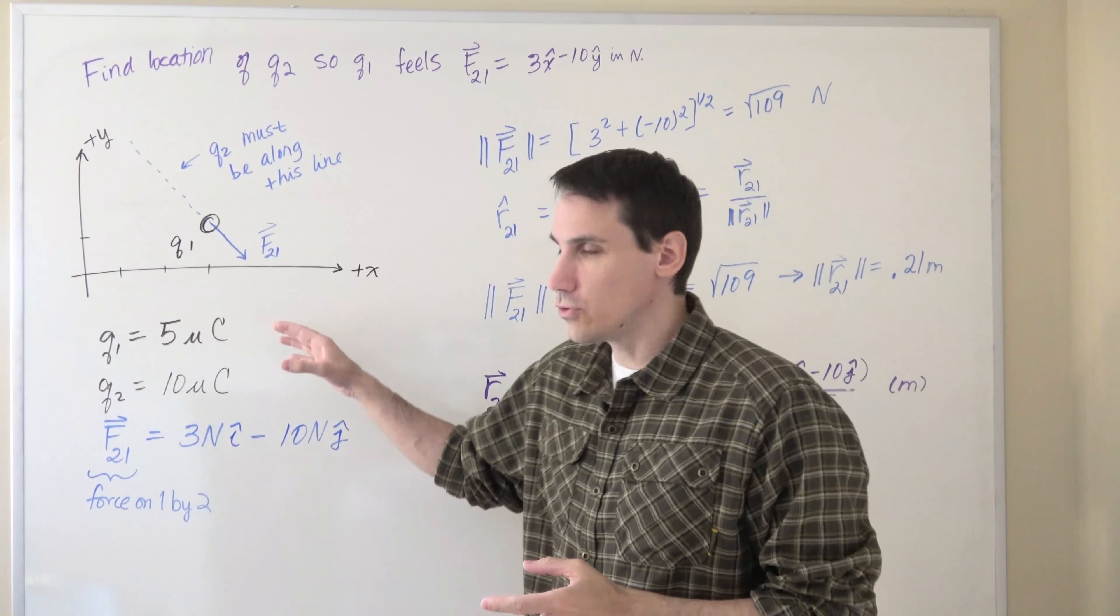In this video we're going to solve a Coulomb's law problem involving two charges. So the basic setup is that we have some charge q1 of 5 micro coulombs and we know the force that that charge is experiencing due to a second charge q2.